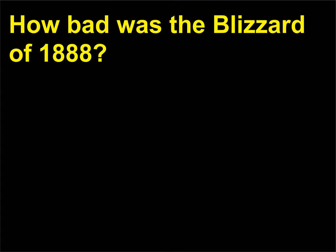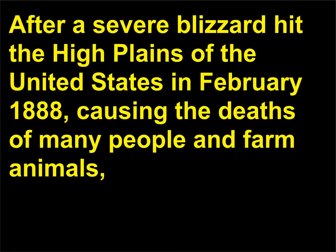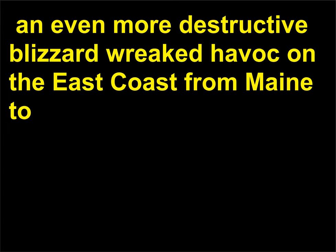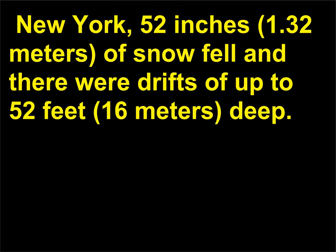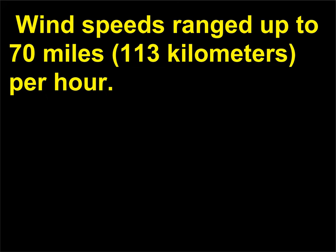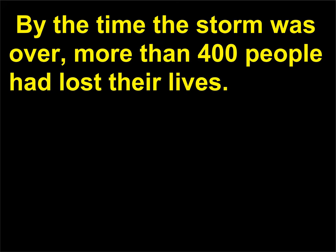How bad was the blizzard of 1888? After a severe blizzard hit the high plains of the United States in February 1888, causing the deaths of many people and farm animals, an even more destructive blizzard wreaked havoc on the east coast from Maine to Chesapeake Bay from March 11 to 14. Several feet of snow fell across the region, and in Saratoga Springs, New York, 52 inches of snow fell with drifts up to 52 feet deep. Wind speeds ranged up to 70 miles per hour, and by the time the storm was over, more than 400 people had lost their lives.